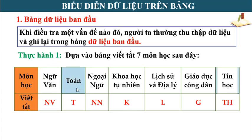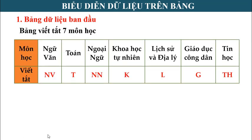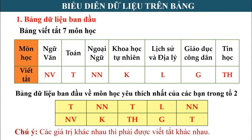Từ bảng viết tắt, cô lập bảng dữ liệu ban đầu về môn học yêu thích nhất của các bạn trong tổ 2, bằng cách hỏi ý kiến từng bạn trong tổ và thu được bảng dữ liệu ban đầu. Sau bài thực hành này, các bạn nhớ: các giá trị khác nhau thì phải được viết tắt khác nhau. Các bạn ghi chú ý này vào tập nhé.